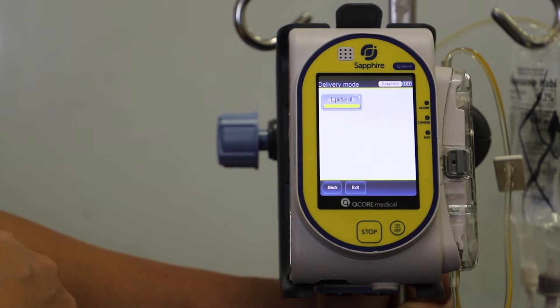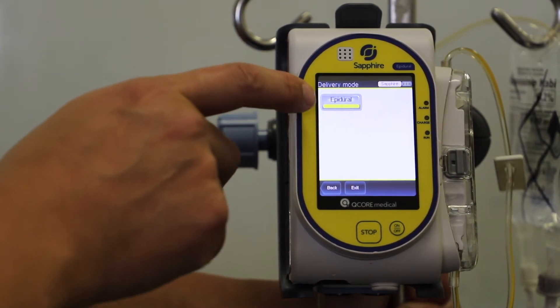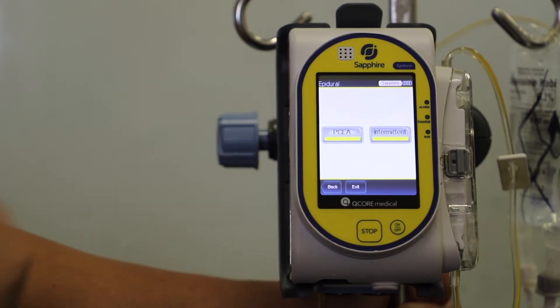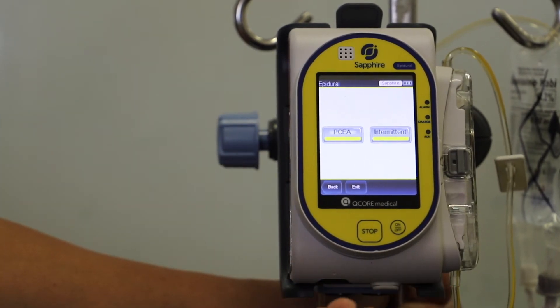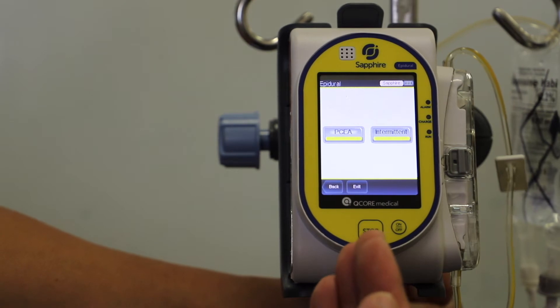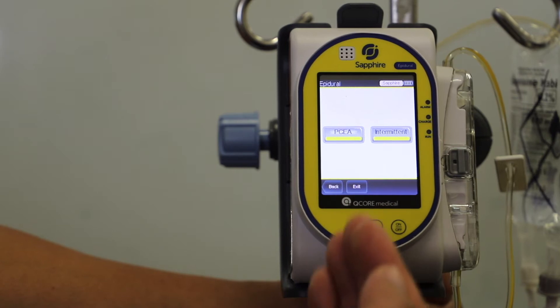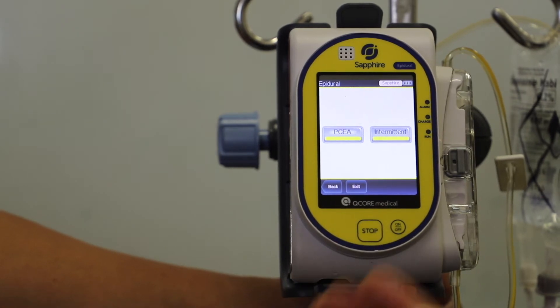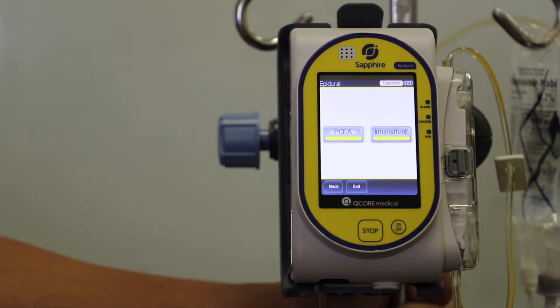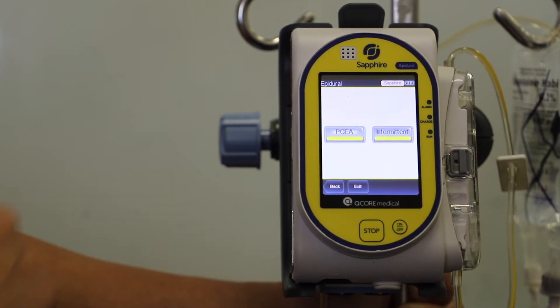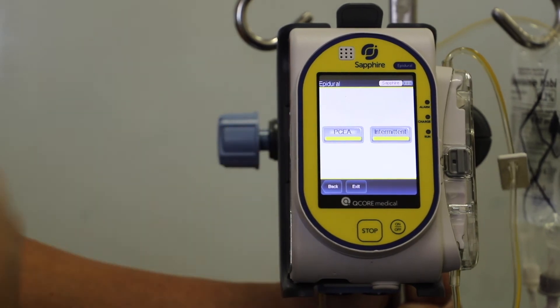You'll be prompted by a selection where it says epidural. Click on that, it will give you two options. The two options will say PCEA, and this is what we would select for a continuous infusion, as opposed to an intermittent, which is for program intermittent boluses. So we select PCEA for continuous.